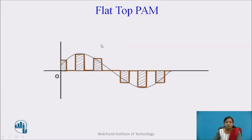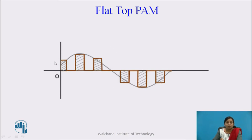Next is flat-top PAM. In flat-top PAM, at the starting of the pulse, the amplitude of this pulse is equal to the instantaneous value of the continuous time signal. For the rest of the cycle, this amplitude remains constant. So the top of all these pulses remains flat or constant. It is called flat-top PAM. It does not follow the natural amplitude of the continuous time signal.